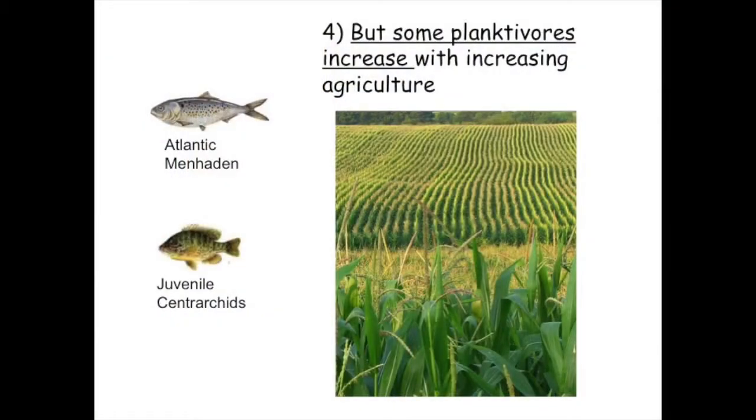However, that's not universal. There are some planktivores that increase with increasing agriculture, and that's important to realize — especially something like menhaden. They're up in the water column and essentially what happens is we're fertilizing the system, so there's more food and more menhaden. Juvenile centrarchids are also planktivores and they seem to at least somewhat benefit from the cropland.